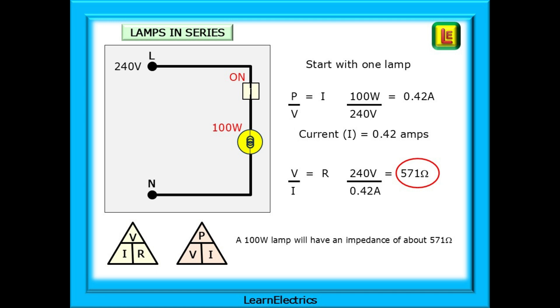We can begin with just one lamp. Power divided by voltage will give us the amps. So, 100 watts divided by 240 volts is 0.42 amps which we've already calculated. Now, calculate the resistance or impedance of the lamp since this is now an AC supply. 240 volts divided by 0.42 amps is 571 ohms. The 100 watt lamp will have an impedance of about 571 ohms.